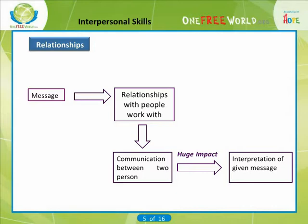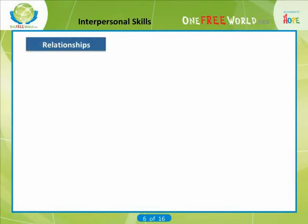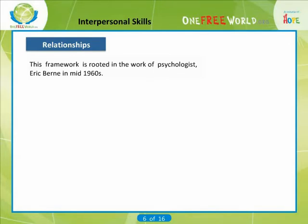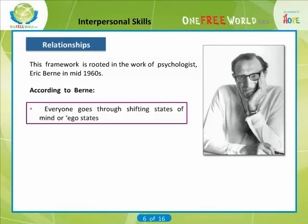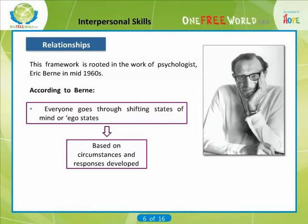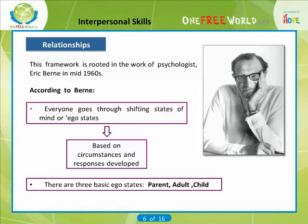In reality, a message like the one just referred to is just one of many which forms part of the ongoing relationships we have with the people we work with. How we get on with each other can have a huge impact on the interpretation of a given message and the subsequent effects that might have on their motivation or morale. The next idea we will introduce is a framework for assessing how relationships are established and evolve, based on the states of mind of those involved. It is rooted in the work of psychologist Eric Byrne, from an idea proposed in the mid-1960s. There are three basic ego states: parent, adult, and child.